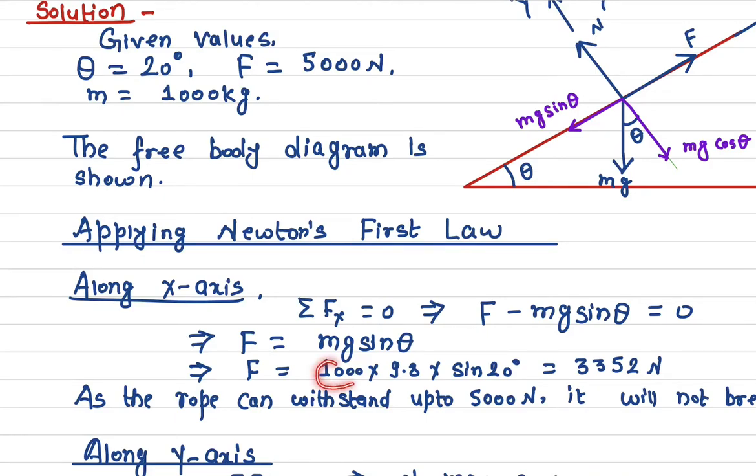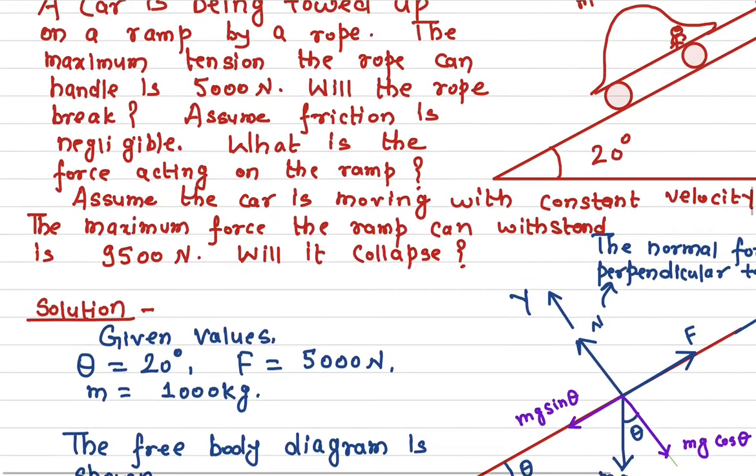The mass is given which is 1000 kilogram. G value we know is 9.8. Sine theta, theta is 20 degrees. So these are all numbers now. If you plug in, what you get is 3352 Newton.